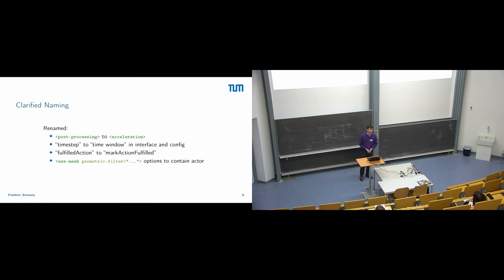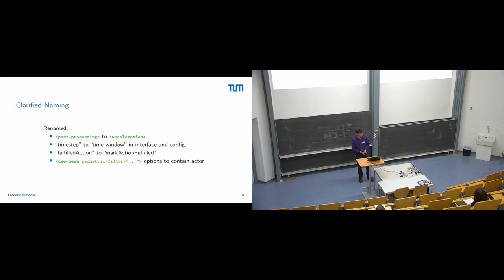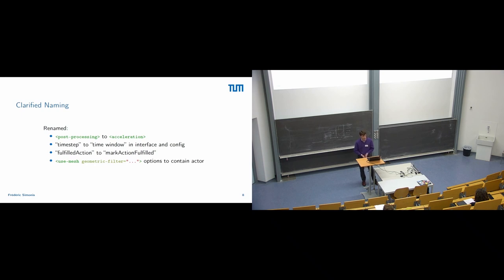We also clarified naming. There is this strange tag called post-processing, which has different meanings in our community. We took advantage of the 2.0 and renamed this — which was a breaking change. In conjunction with the continuous time interpolation, we got rid of an ambiguity: we used 'time step' in a few different meanings, which we now corrected, using 'time window' in most cases. We also renamed the 'fulfilled action' to something more understandable, and renamed some options in the geometric filters.